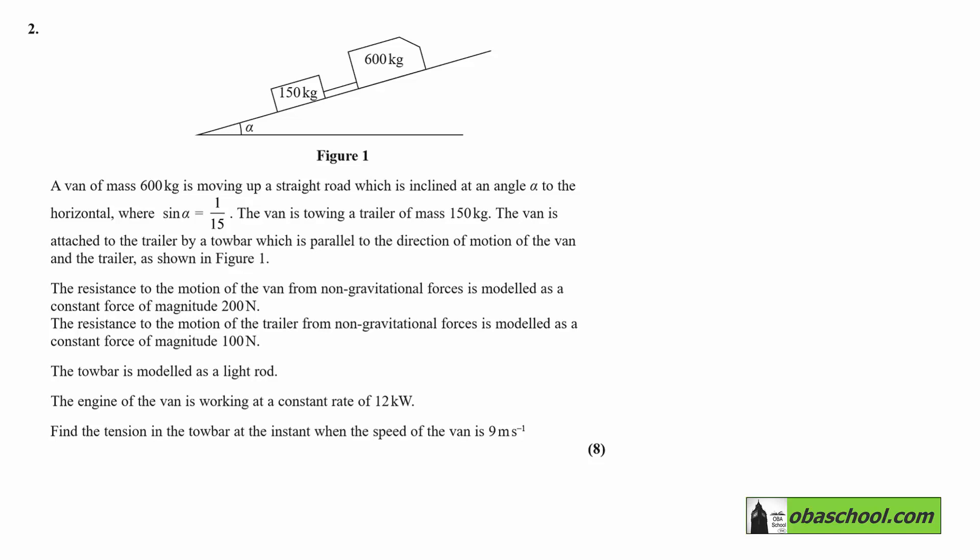The tow bar is modeled as a light rod. The engine of the van is working at a constant rate of 12 kilowatts. Find the tension in the tow bar at the instant when the speed of the van is 9 meters per second.